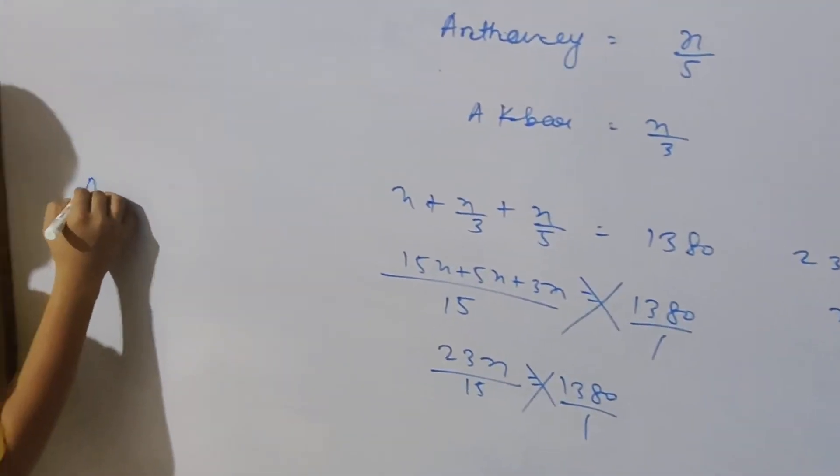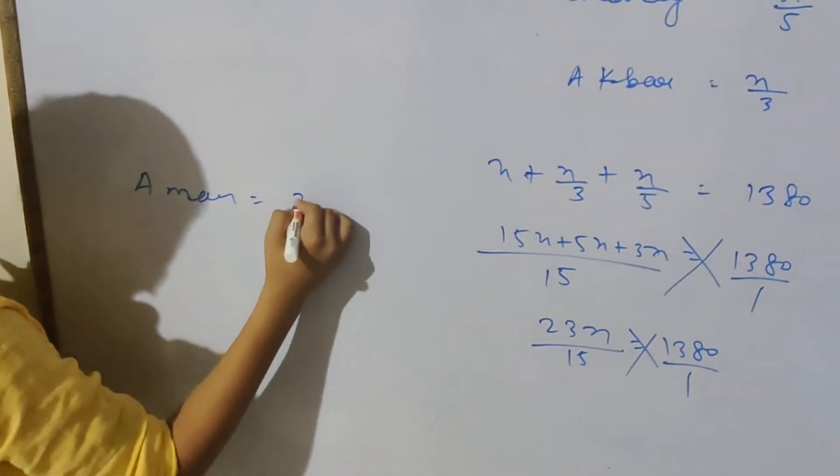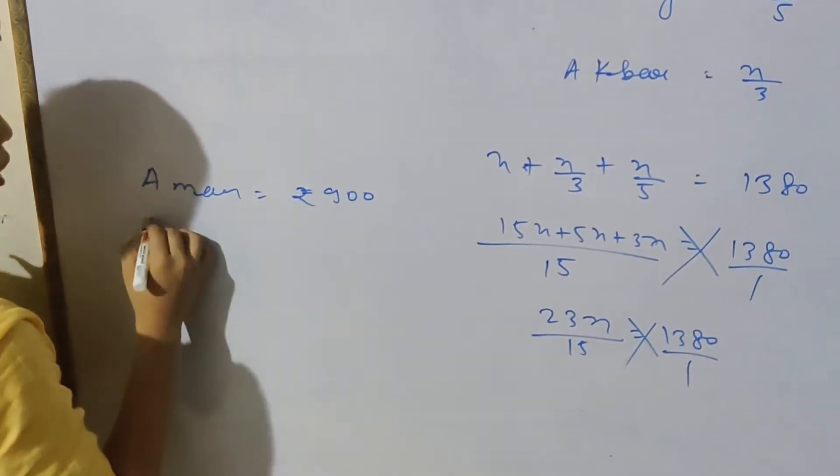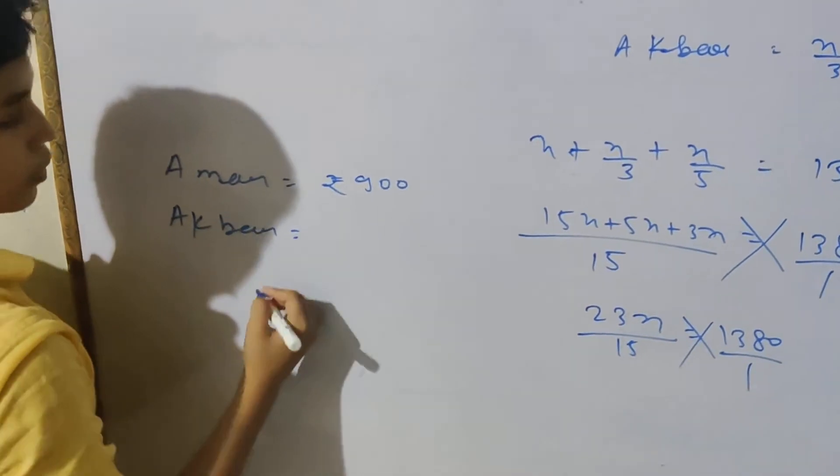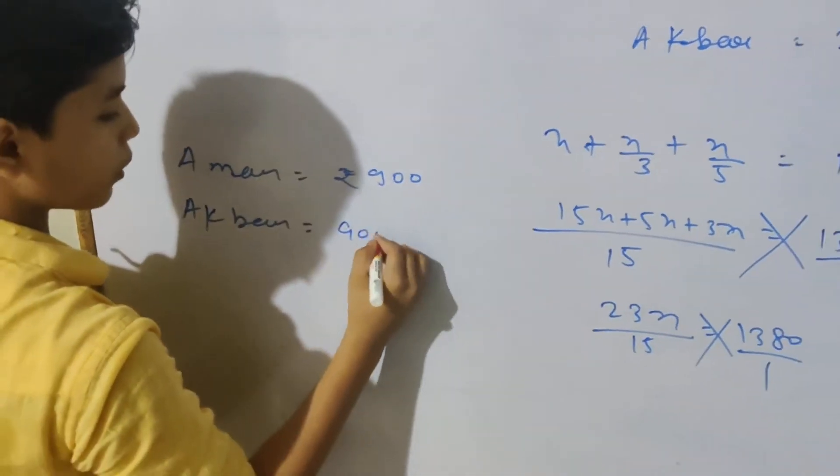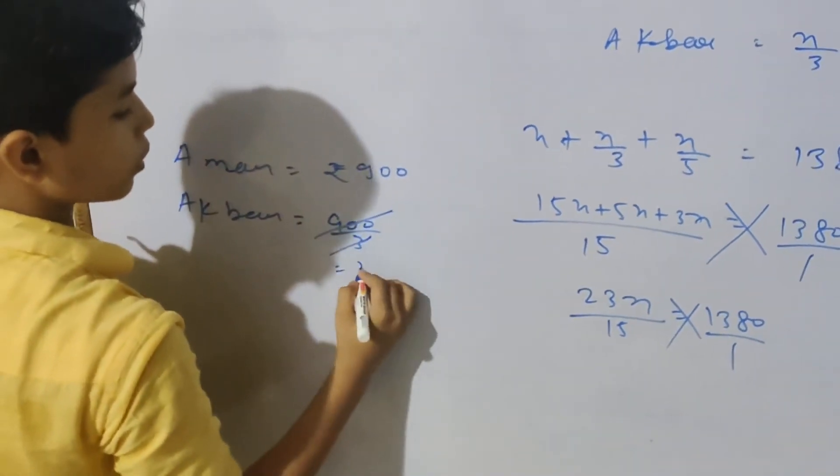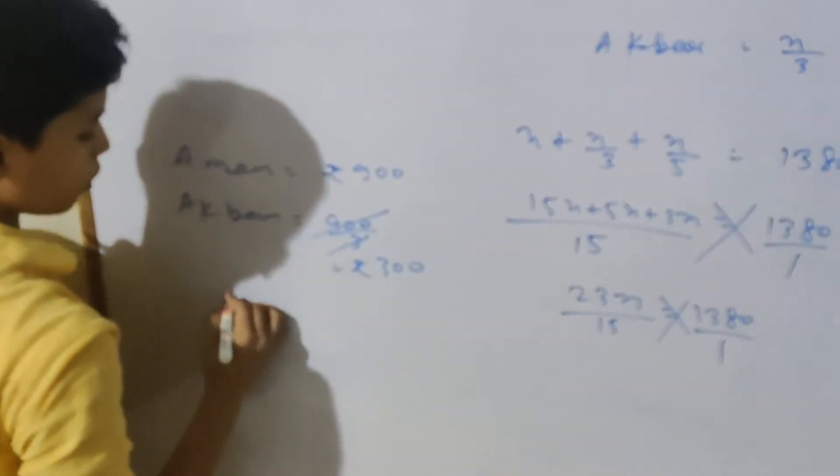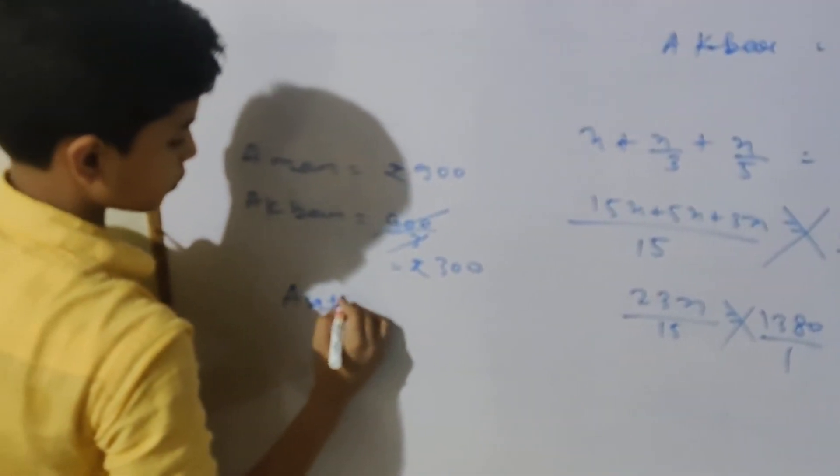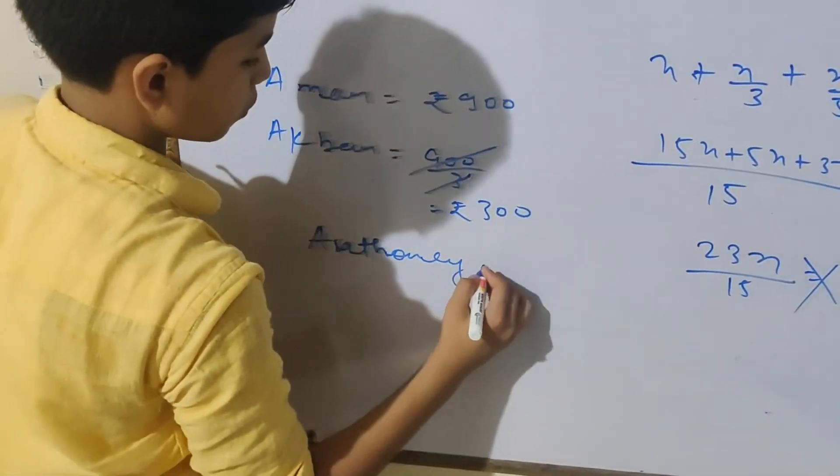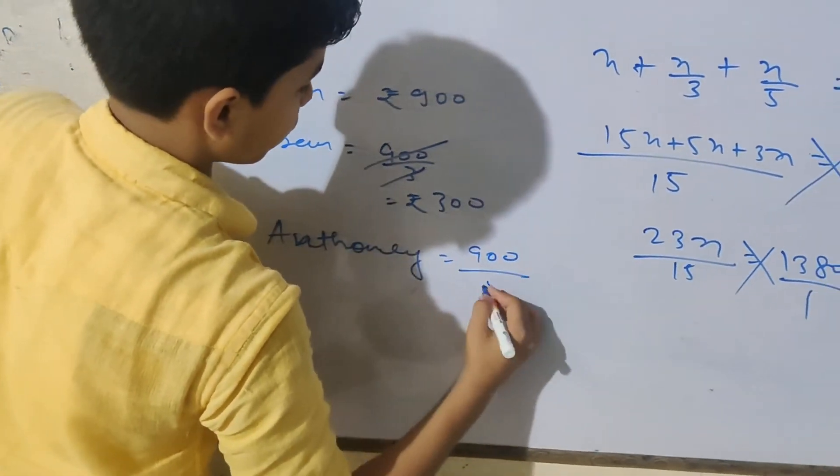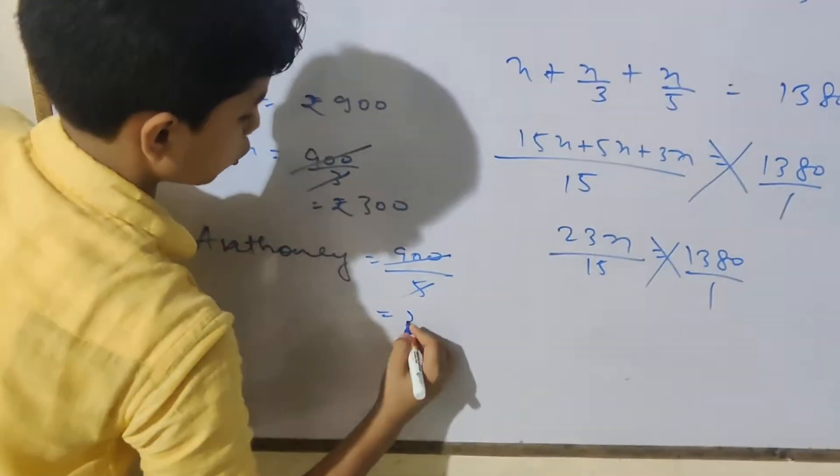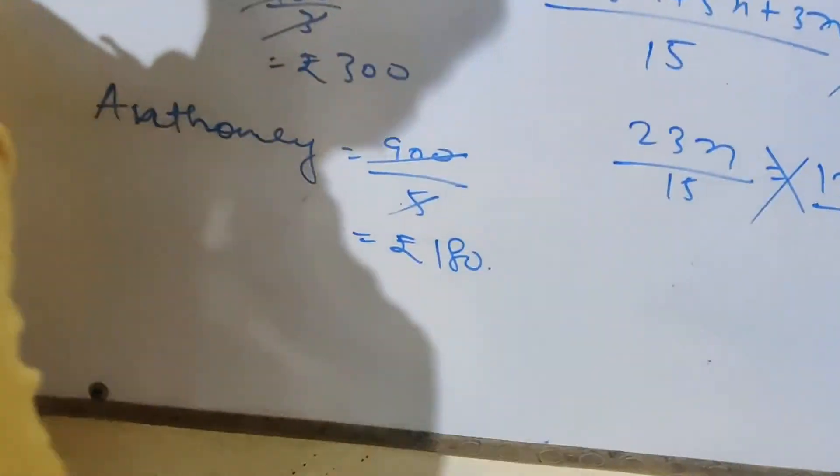Now see, Amar's share is 900. Akbar gets x/3, which is 900 by 3, equals rupees 300. Anthony gets x/5, which is 900 by 5, equals rupees 180. Next question.